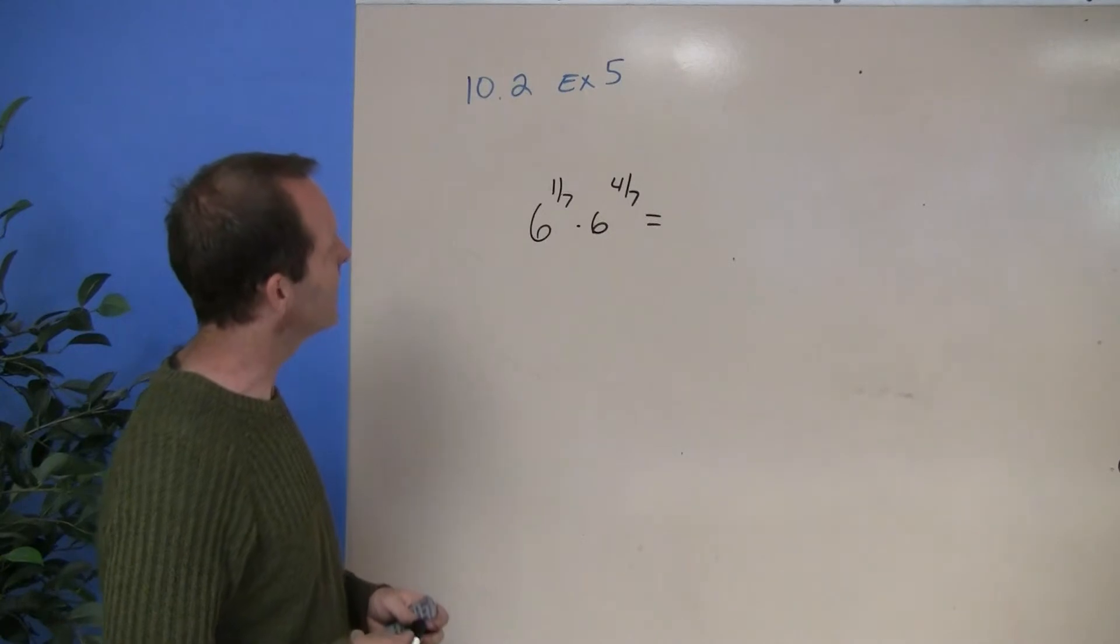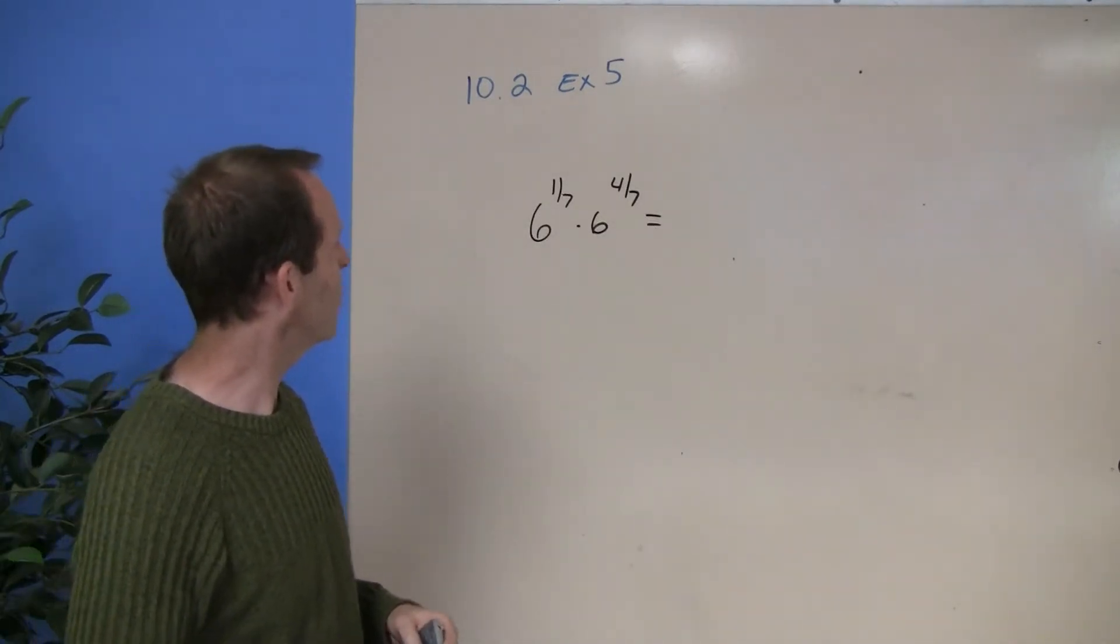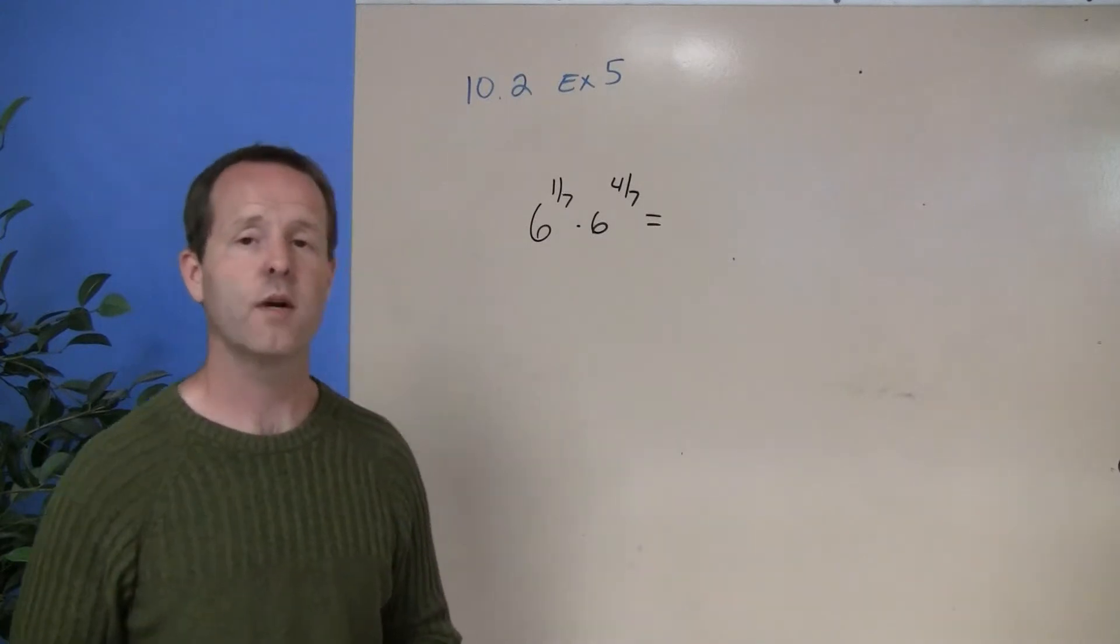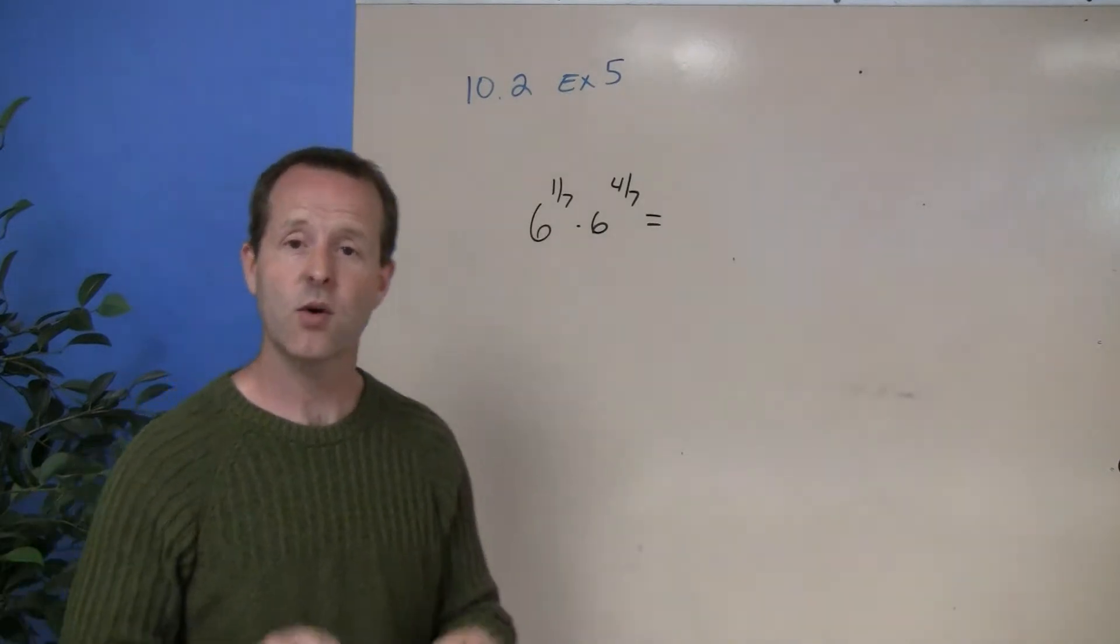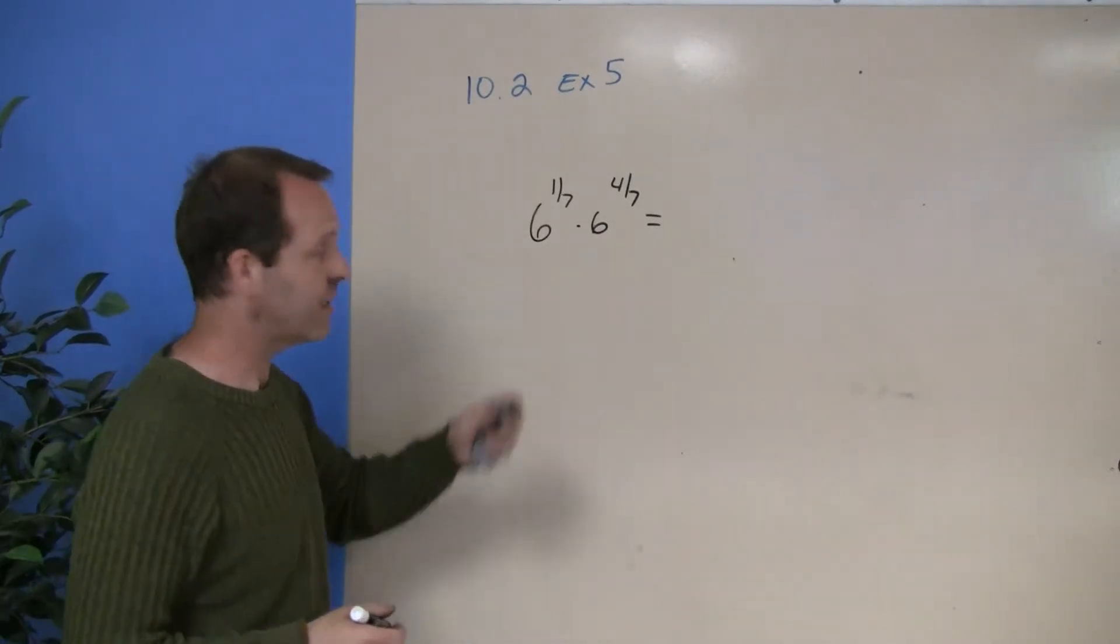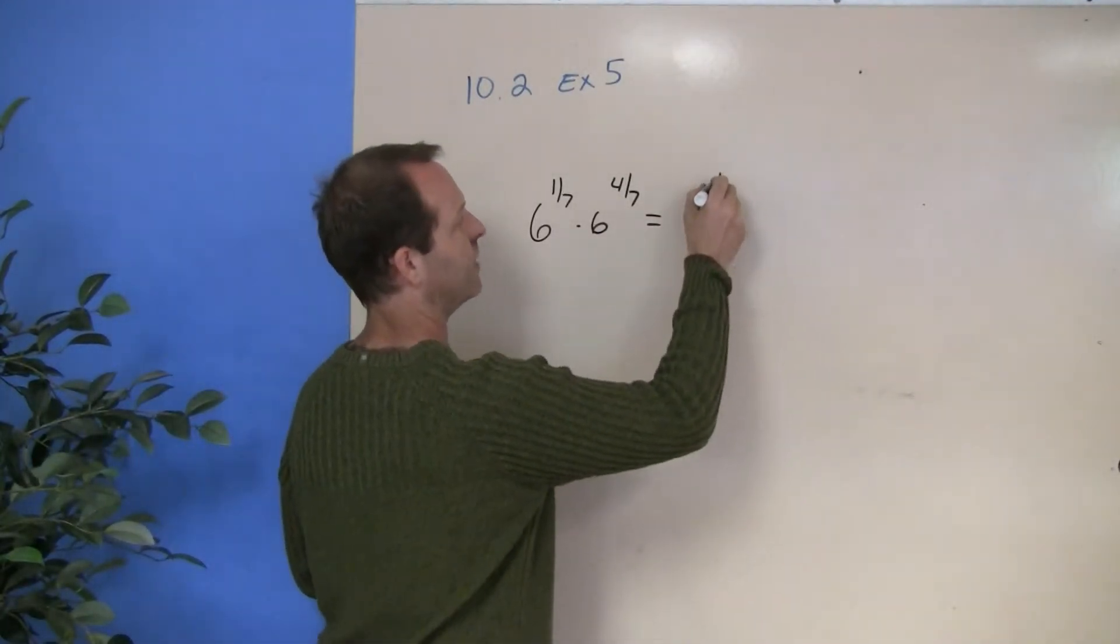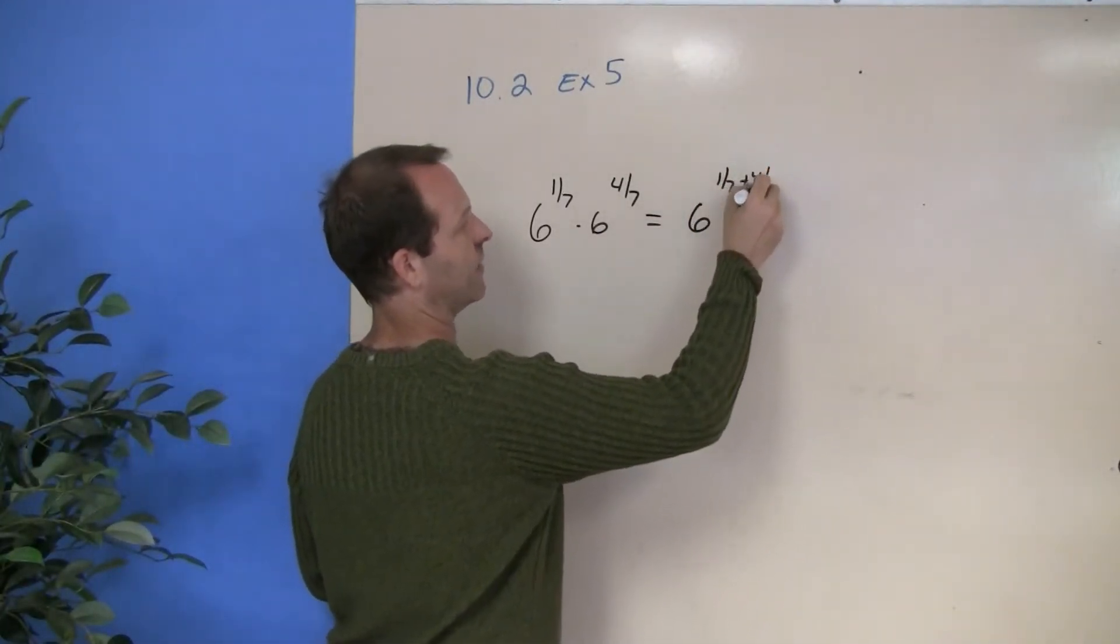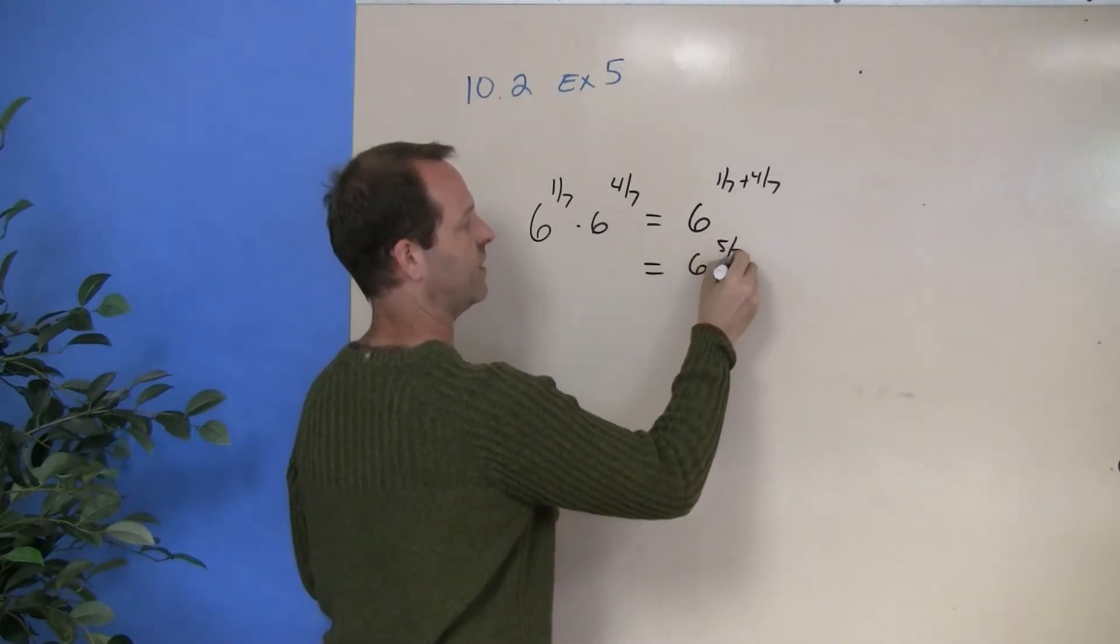So what we're looking at is multiplying two numbers, 6 to the 1/7th times 6 to the 4/7ths. Do you guys remember what we did when we multiply exponents? Well, if the bases are the same, we just add the exponents. And the bases here are the same. So this becomes 6 to the 1/7th plus 4/7ths or 6 to the 5/7ths.